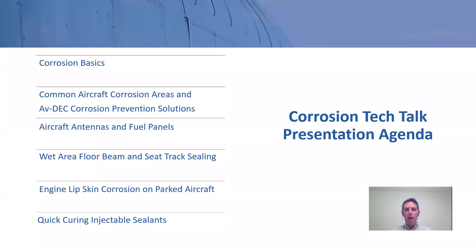Here's the agenda for today's Tech Talk. We'll talk about corrosion basics, common aircraft corrosion areas and solutions to help prevent corrosion in those areas. We'll talk about antennas, fuel panels, wet area floor beams, seat tracks, engine lip skins on parked aircraft — which is relevant right now due to the COVID-19 epidemic and a lot of airplanes being grounded. And then we'll also talk about quick curing injectable sealants.